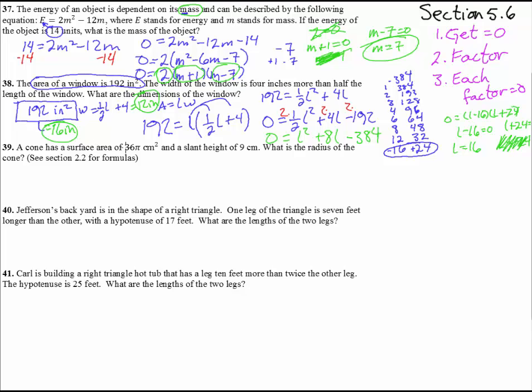Alrighty. Let's try the next one. A cone has a surface area of 36 pi centimeters squared and a slant height of 9 centimeters. Does that just freak you out or what? What is the radius of the cone? So section 2.2, flip back there and we get the following formula. Surface area is pi r squared plus pi r L. And this L stands for slant height. So if we stick what we've got in there, we have 36 pi centimeters squared for the surface area is pi r squared plus pi times r, which we don't know, times 9.